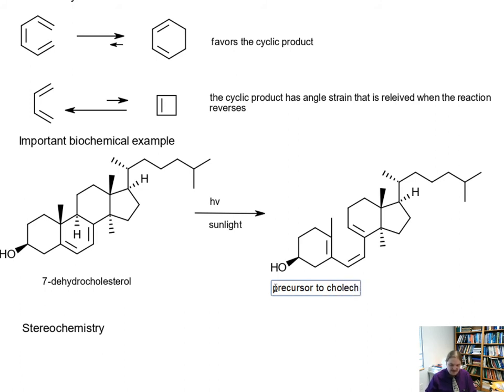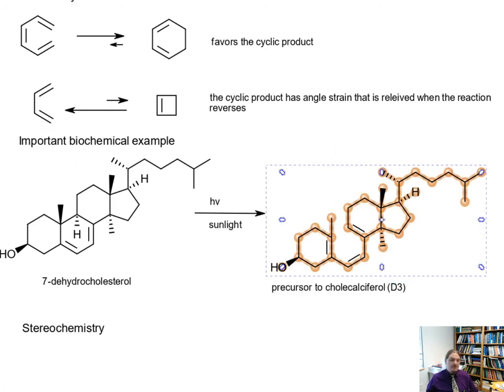And it's specifically a precursor to cholecalciferol, which is the form of vitamin D3 that animals make. This step is likely occurring inside you as you are watching this video, if you're being exposed to UV light—it's an electrocyclic ring opening.